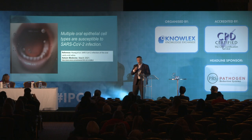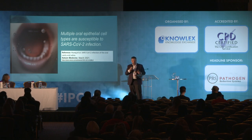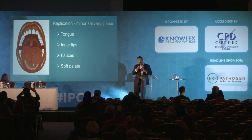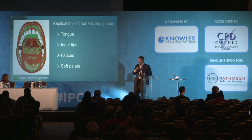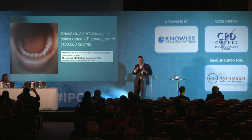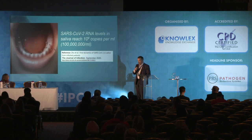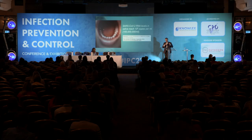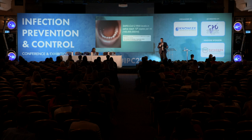We know that cells which line the mouth are highly susceptible to infection and viral replication, especially in the minor salivary glands present over the surface of the tongue, on the inner surface of the lips, the soft palate, and the fauces. From these cells the virus enters into saliva in alarmingly high concentration, such that a single teaspoon of saliva will contain 500 million copies of the virus — half a billion in a single teaspoon.